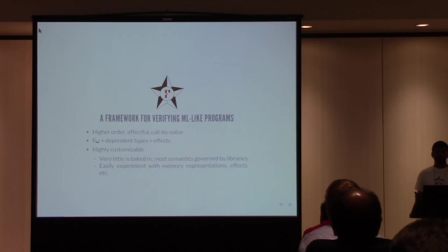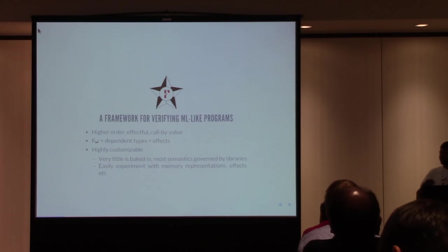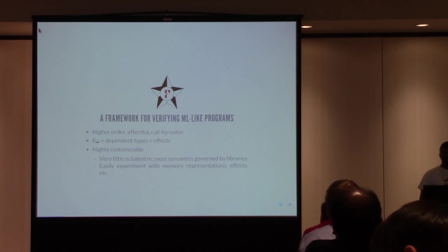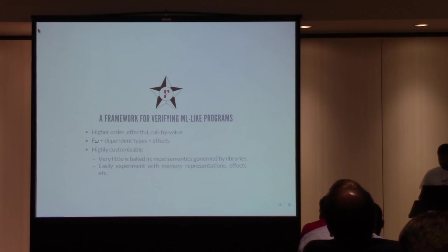At one level of abstraction, you can think of F-Star as being like F-omega, but we add dependent types to it and we also add effects to it. And it's very customizable, so most things are not baked into the semantics but provided by libraries that, for example, give semantics to how the effects work or give semantics to the way the heap of the program is set up. So the user gets to change these things, subject to some proof obligations, when they try to verify their program.